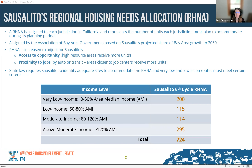The RHNA is the Regional Housing Needs Allocation. It is assigned by the State Department of Housing and Community Development, HCD, to each Council of Governments throughout the state of California, or to individual counties where there is no Council of Governments. The Council of Governments then takes that RHNA and assigns it to each jurisdiction. The RHNA represents the number of housing units by income level that each jurisdiction must plan to accommodate during its housing element planning period.